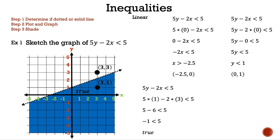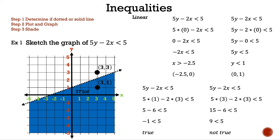To make sure there isn't any funny business going on, we need to check the other point. Let's rewrite the inequality again and substitute the other point (3, 3). And now we have 5 times 3 minus 2 times 3 less than 5. 5 times 3 is 15, and 2 times 3 is 6, so now we have 15 minus 6 less than 5. And 15 minus 6 is 9, so now we have 9 less than 5. Is that true? It is not true, meaning every point in that section makes the inequality not true. That is example 1.